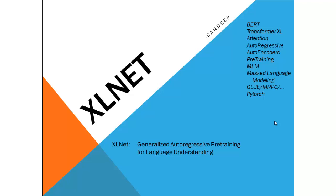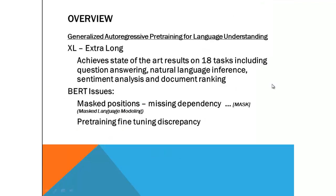Today we are going to talk about XLNet. In this term, XLNet means extra long. The full form of XLNet is generalized autoregressive pre-training for language understanding. We will talk about these terms while explaining XLNet. The extra long word is derived from Transformer-XL, so XLNet actually came after Transformer-XL.